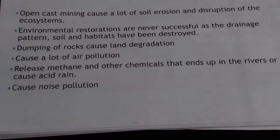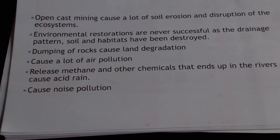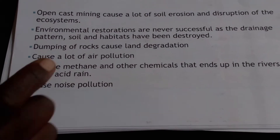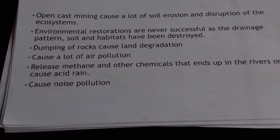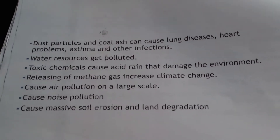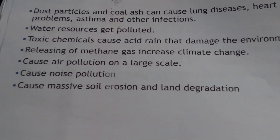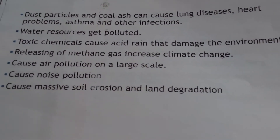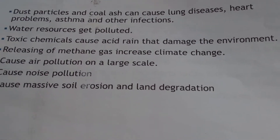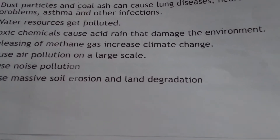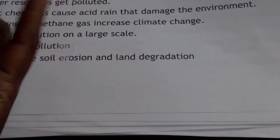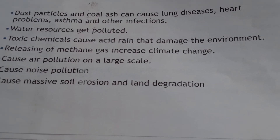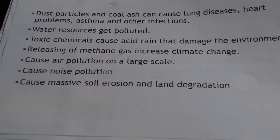Coal also causes a lot of air pollution. It releases methane and other chemicals which end up in rivers, causing acid rain. Methane is a greenhouse gas, so it also leads to global warming. The processes of coal extraction also cause noise pollution. Dust particles and coal ash can cause respiratory problems like lung diseases and asthma. Water resources can also get polluted — toxic chemicals cause acid rain and they damage the environment.